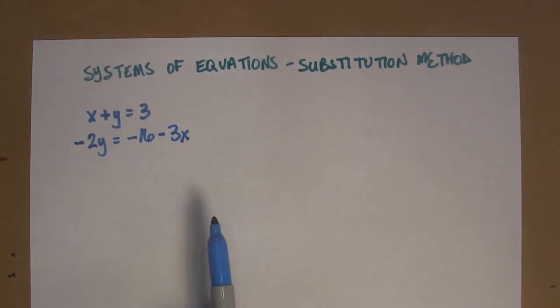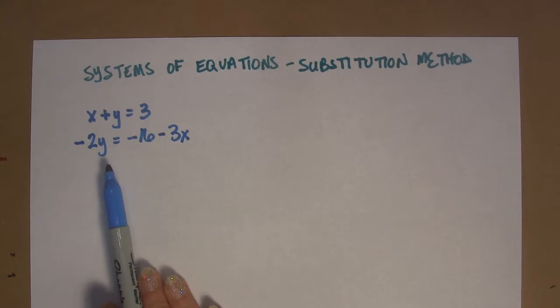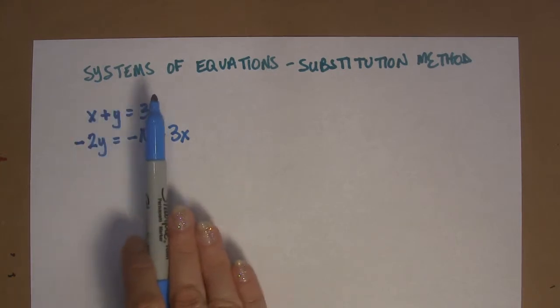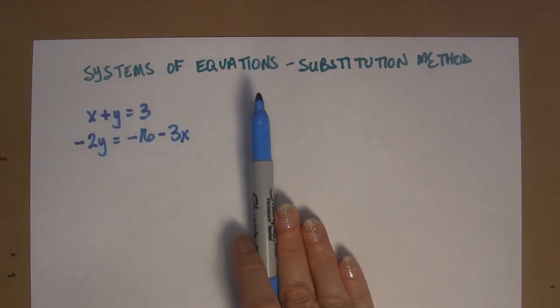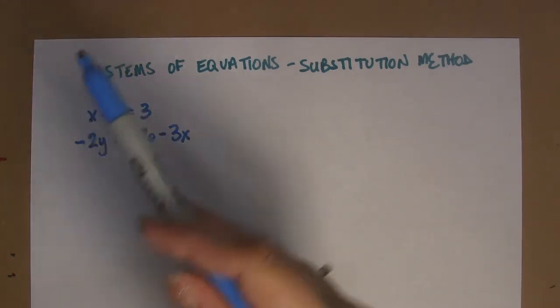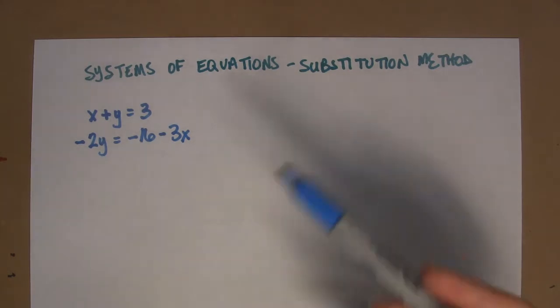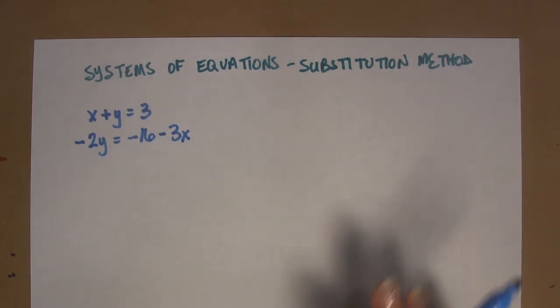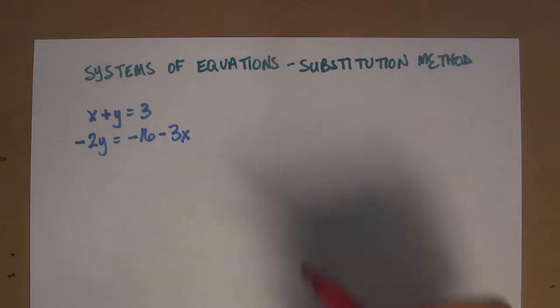Now you know from previous videos that we could line up all of our x's and line up all of our y's and line up all of our other numbers and then multiply this top equation by 2 and then add it together and blah blah blah. Yes, we could do that. But the point of this video is to show you another way to approach things.